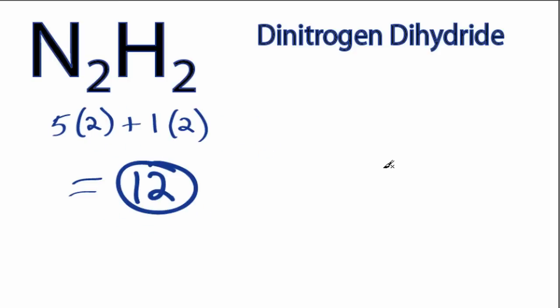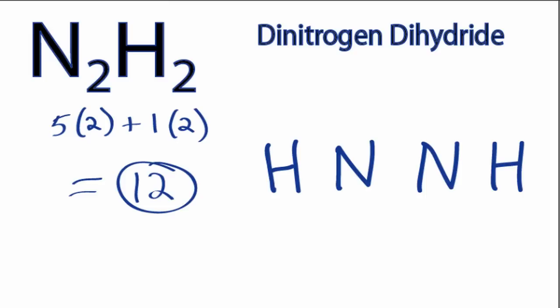Hydrogens always go on the outside, so let's put the 2 nitrogens in the middle, and then we can put a hydrogen on the outside of each of those. We've used the 2 hydrogens and the 2 nitrogens. We have 12 total valence electrons to work with.